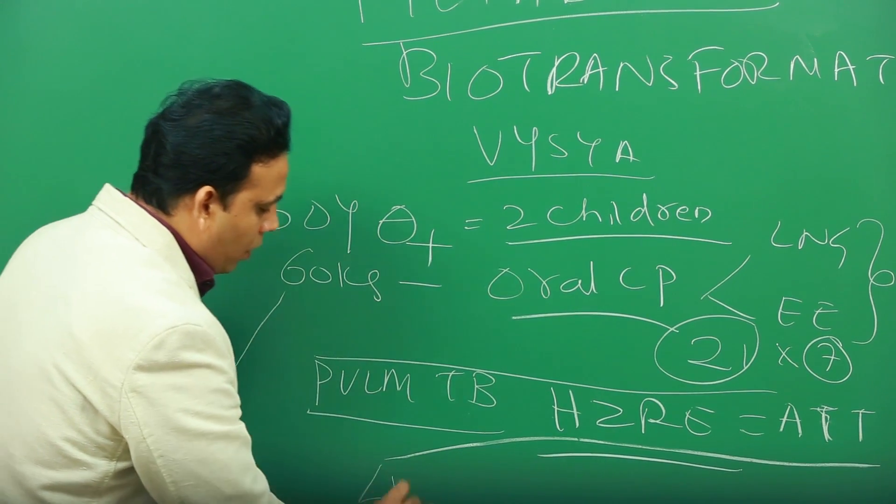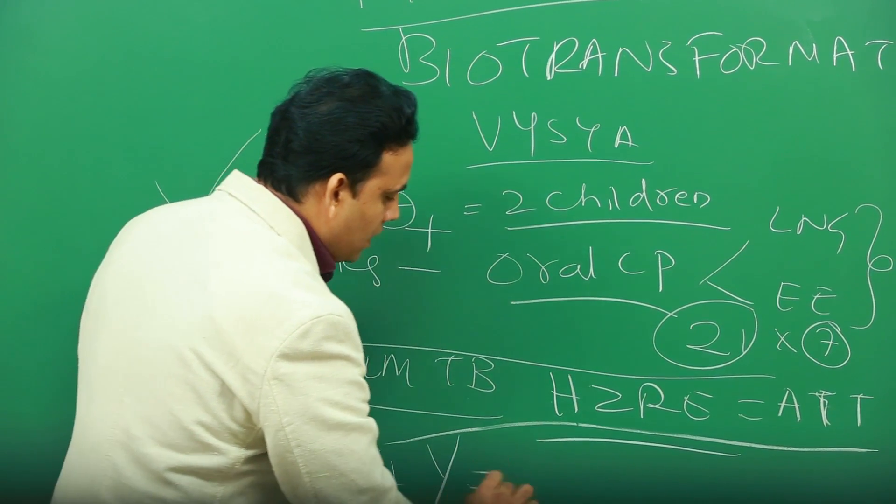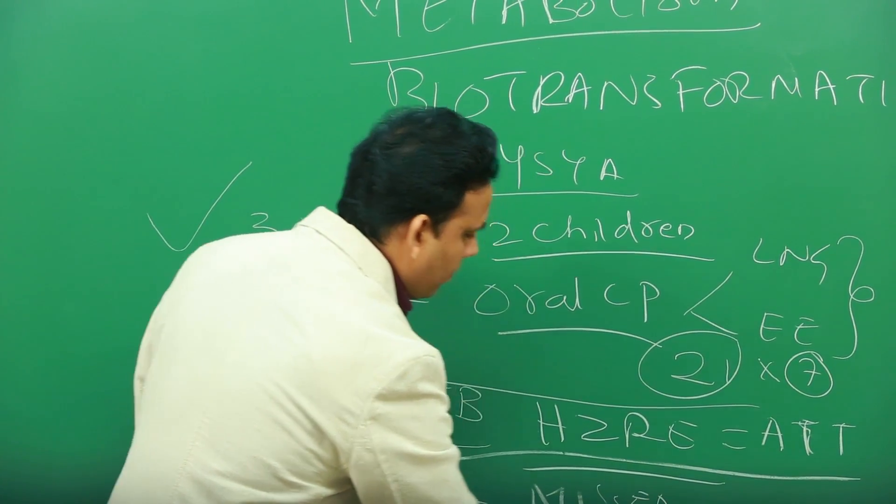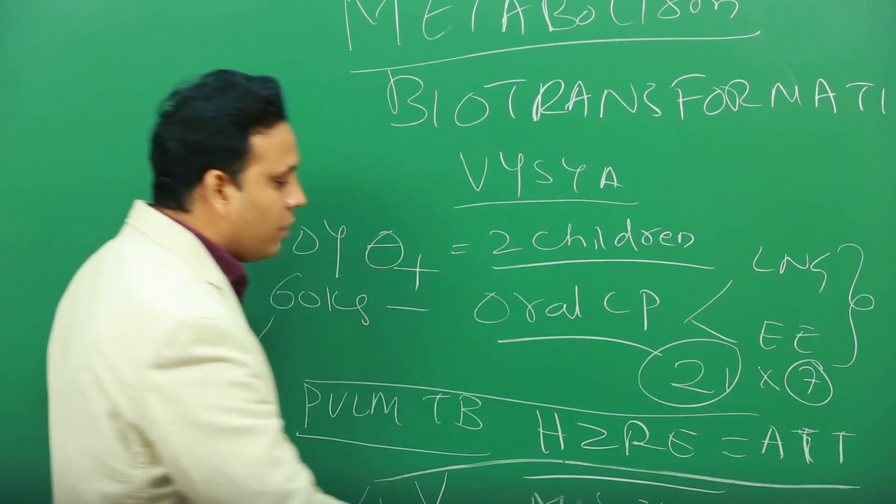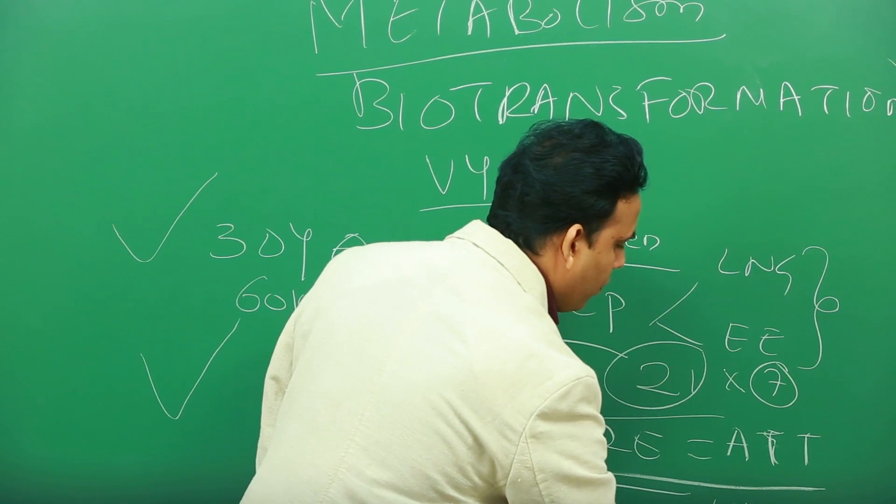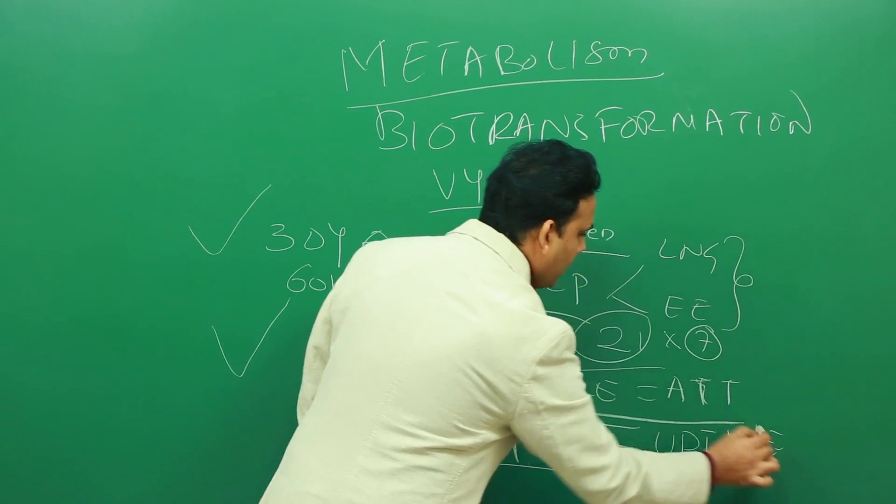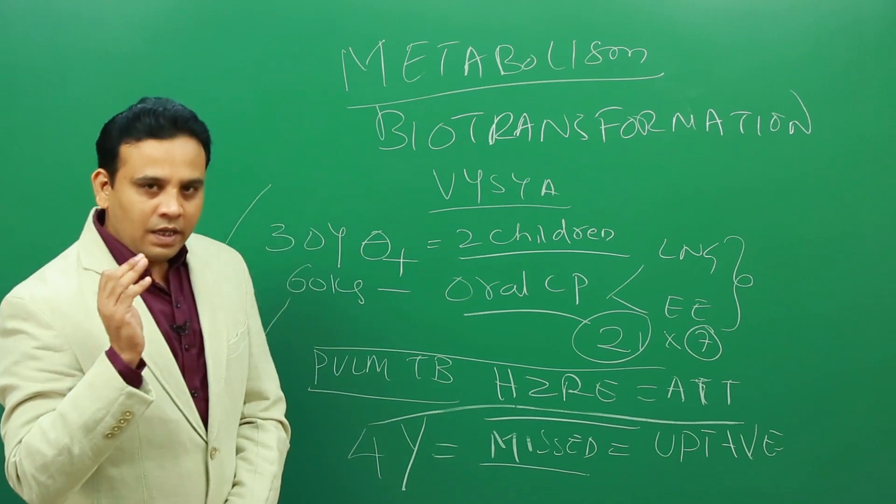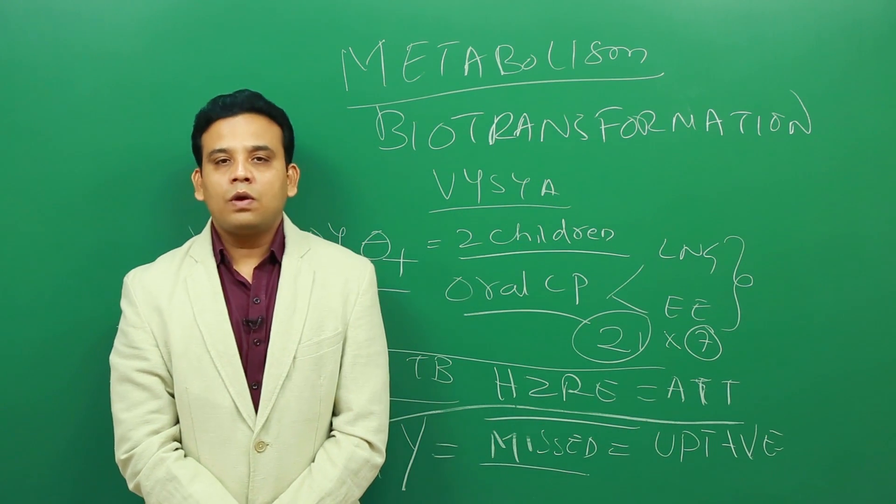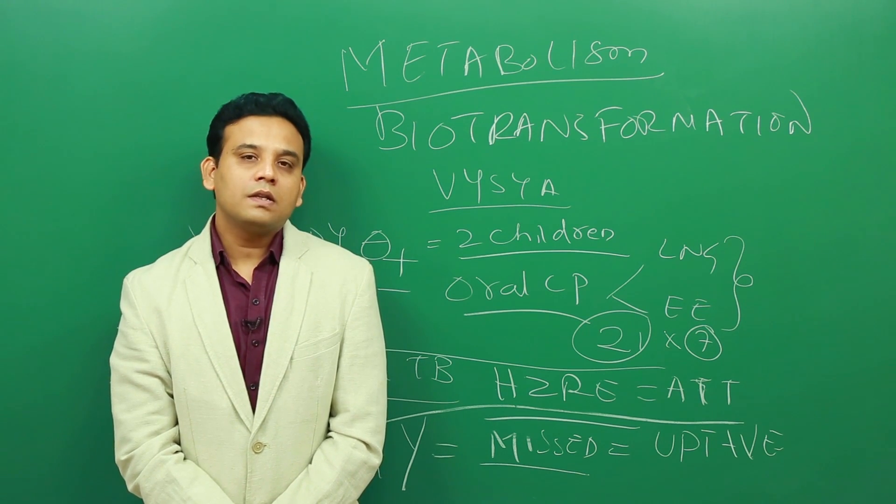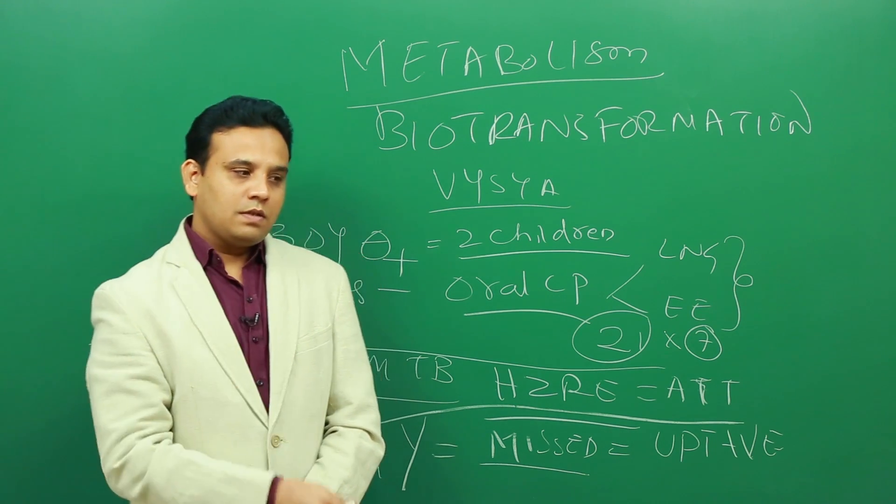After four months of treatment, she has come to the doctor with complaints that she has missed her period. Upon evaluation, she is found to have urine pregnancy test positive. It means in spite of taking oral contraceptive pills, she has conceived the pregnancy.